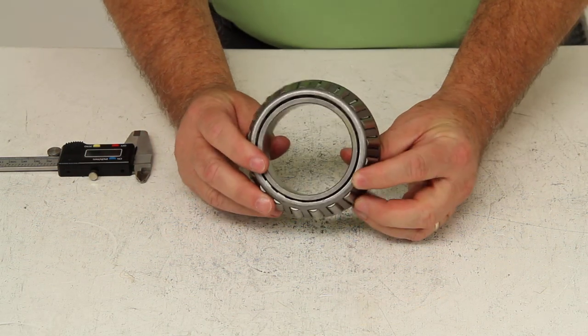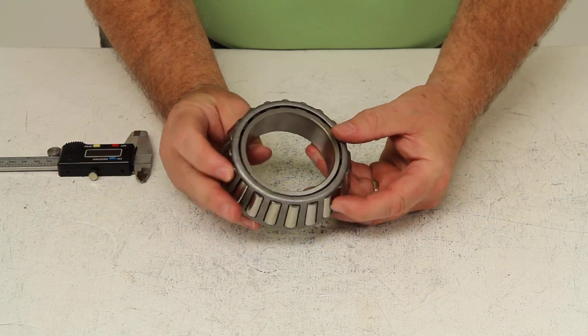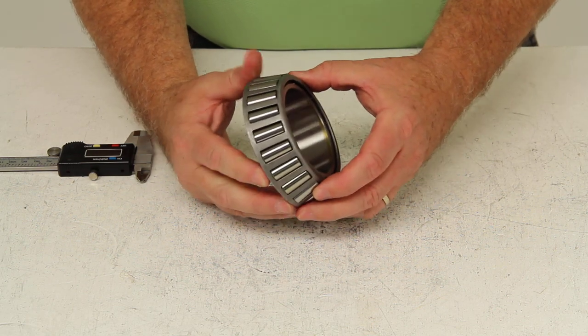When installed on the spindle, it would be lubricated with either wheel bearing grease or oil.